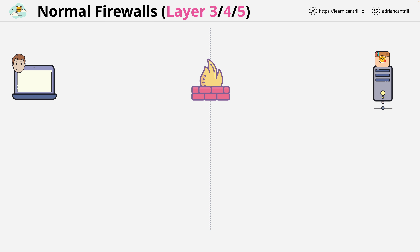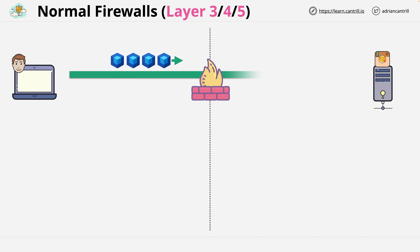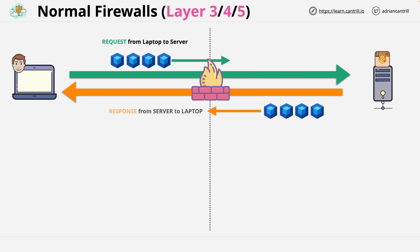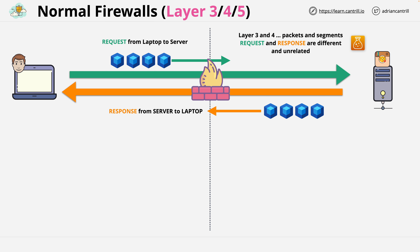This application is accessed by millions of people globally. Because this is a layer 3 and 4 firewall, it sees packets and segments, IP addresses, and ports. It sees two flows of communication — requests from the laptop to the server, and responses from the server back to the laptop. Because this firewall is limited to layer 3 and 4 only, these are viewed as separate and unrelated — different streams of data, request and response, even though they're part of the same communication from a human perspective.